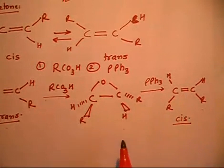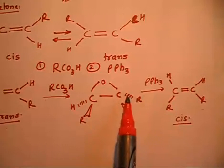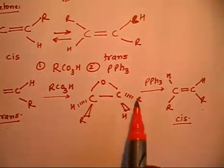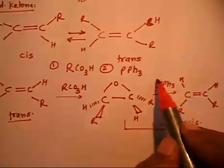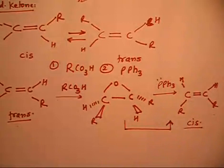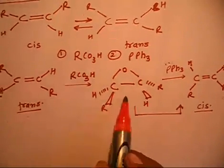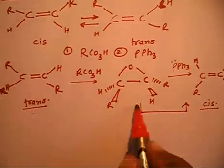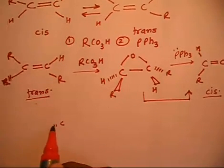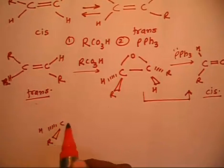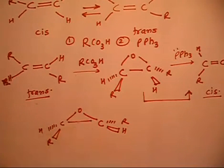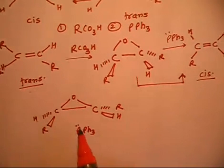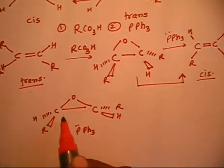The question asks you to write down the mechanism for this step — how you go from the epoxide to the alkene product. The mechanism is straightforward: PPh3 has a lone pair on phosphorus, so it can act as a nucleophile. The molecule can be drawn showing the epoxide carbons with H and R substituents, and PPh3 attacks as the nucleophile. It can attack on either carbon — it does not matter.